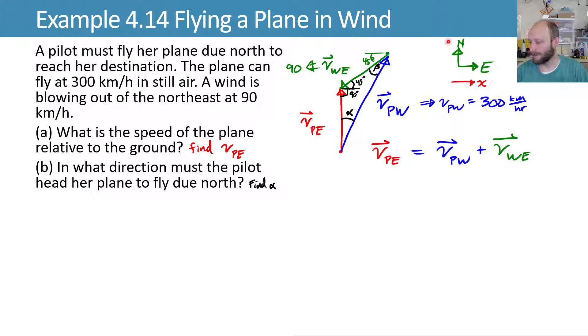Now we'll call X direction to the right, Y direction up. And we'll note that this 300 can be resolved into an X and a Y component by using that angle alpha. So the X direction, we get the expression of this vector function in the X direction, is VPE, the X components of each of these things. And what that means is basically this VPE has no X component, so it'll be zero. VPW X is this 300 sine alpha. And then this VWE X is going to be a negative 90 times cosine of 45 degrees.